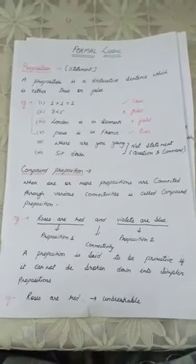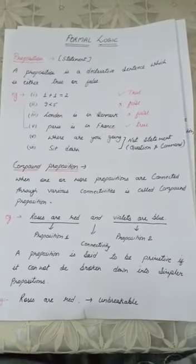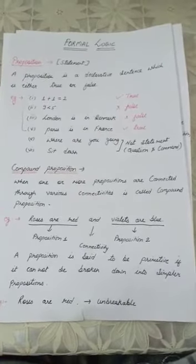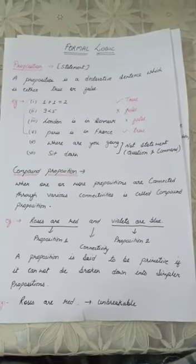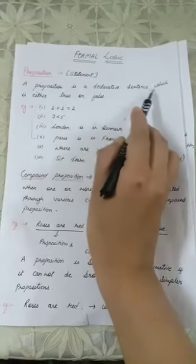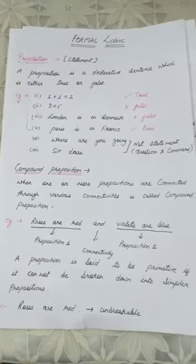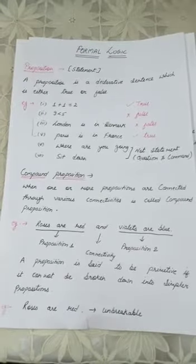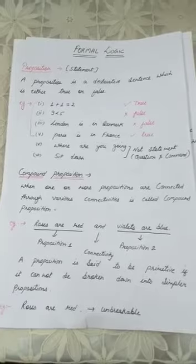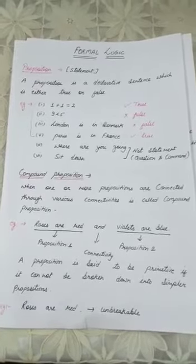Proposition is a statement, like normal English sentences such as 'I am going to school' or 'I am eating my food.' Those kind of statements are called propositions. A very important thing is a proposition is a declarative sentence which is either true or false. This true or false is known as the truth value of the particular sentence.